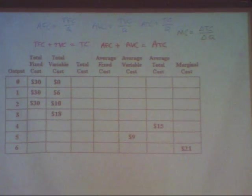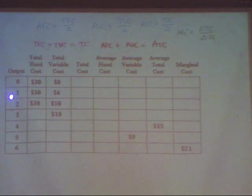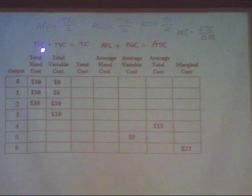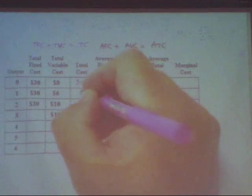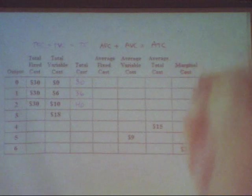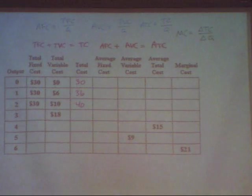Knowing those things will enable you to fill in all the numbers in the table, which requires some critical thinking. The first things I noticed in the table is that when output is zero, one, or two, I know what the fixed cost is and I know what the variable cost is. Using the formula — fixed plus variable equals total — 30 plus 0 equals 30, 30 plus 6 equals 36, 30 plus 10 equals 40.